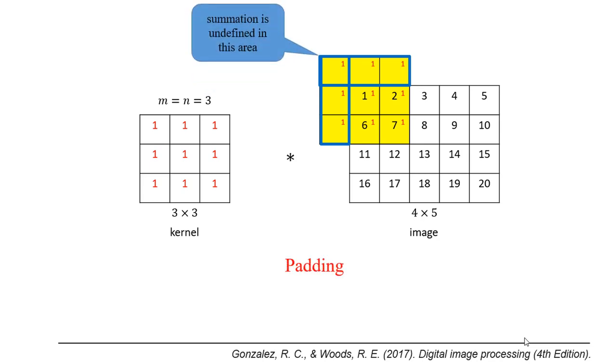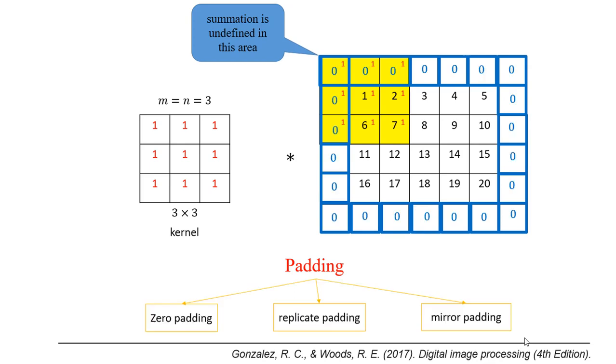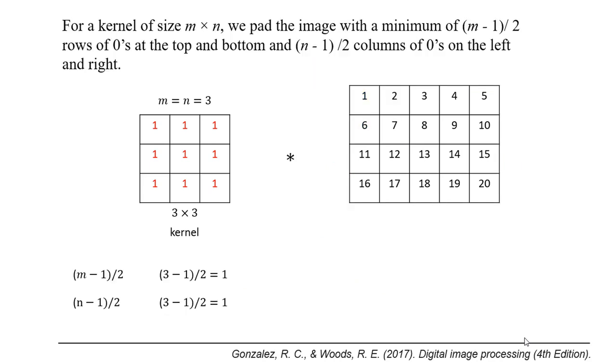We can solve this problem by padding the image with zeros on each side. In the next video I will talk about different types of padding, but in this video we will use zero padding. In general, for a kernel of size m×n, we pad the image with (m-1)/2 rows of zeros at the top and bottom, and (n-1)/2 columns of zeros on the left and right.